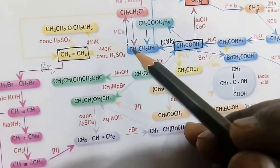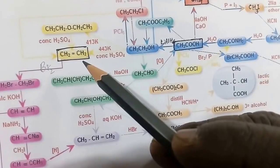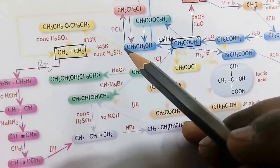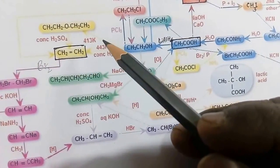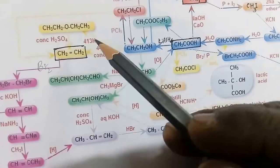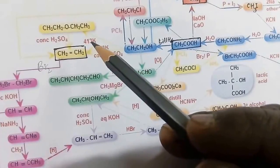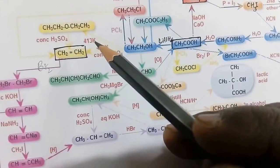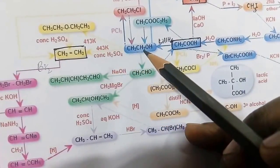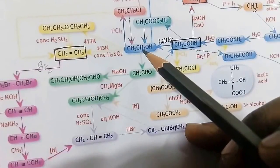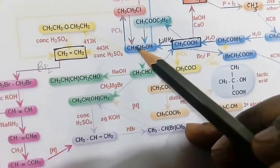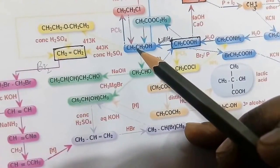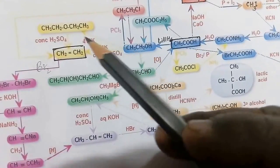From ethanol, at 443 K the dehydration product is ethylene. But when the temperature is lower — at about 413 K — two moles of ethanol react and one mole of water is removed.